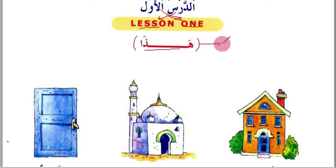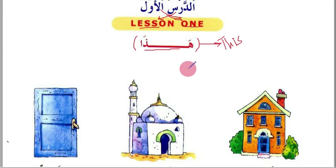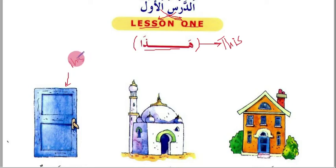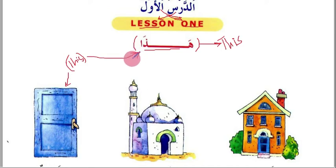'Hadha' means 'this' in English. You know from English grammar that a demonstrative pronoun is a pronoun we use to identify things. For example, 'this door' or 'this is a door'. In Arabic language, for the word 'this' we have 'hadha'.